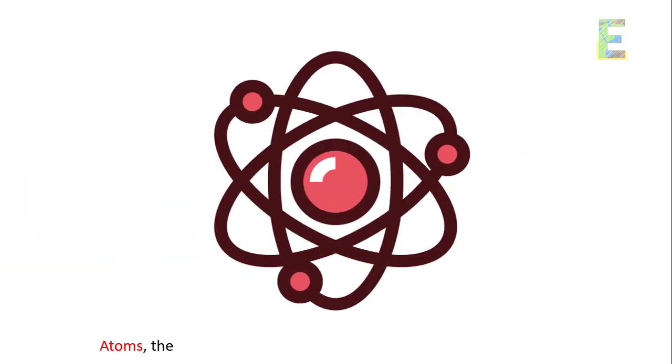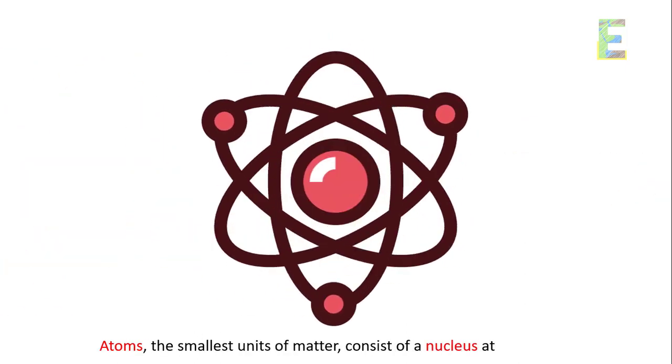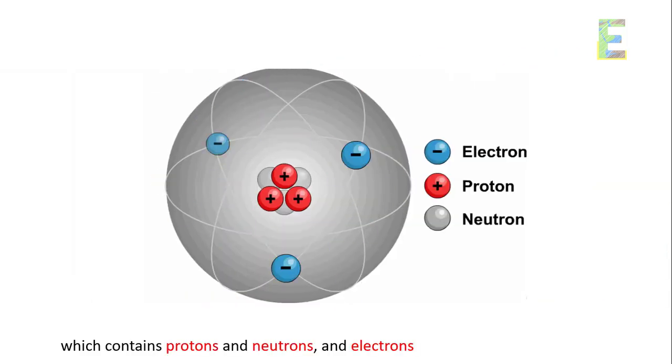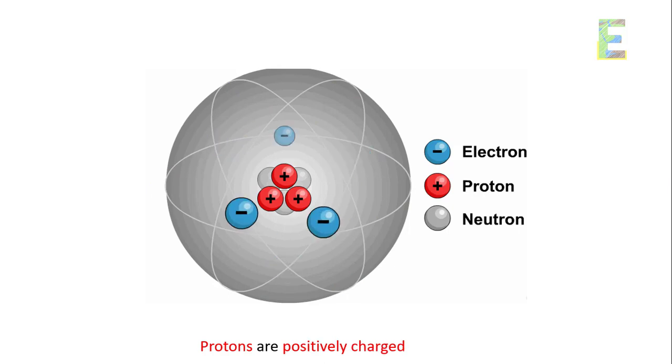Atomic structure. Atoms, the smallest units of matter, consist of a nucleus at the center which contains protons and neutrons, and electrons orbiting around the nucleus. Protons are positively charged particles.